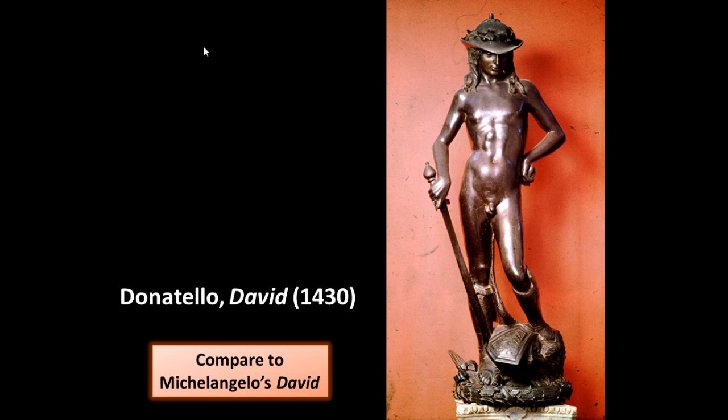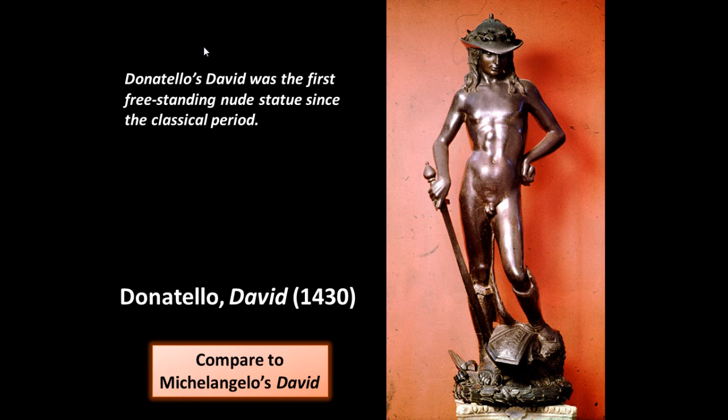Donatello's David — notice he's naked. Nudity was prevalent in Greco-Roman art but not at all in Christian medieval art. Donatello sculpts David in the nude, making this the first freestanding nude sculpture of the Renaissance. Since the classical period, Romans did this sort of thing all the time, but a thousand years had passed in Europe without anyone sculpting naked freestanding figures. Of course, David does have company — Goliath's head beneath his feet.